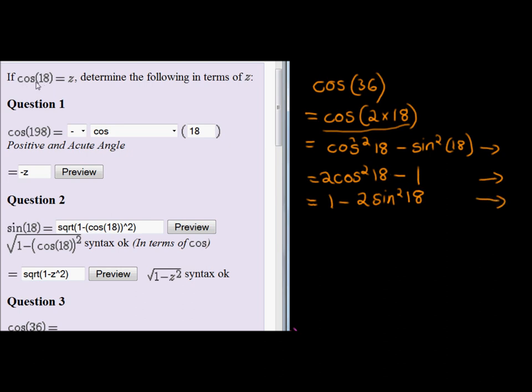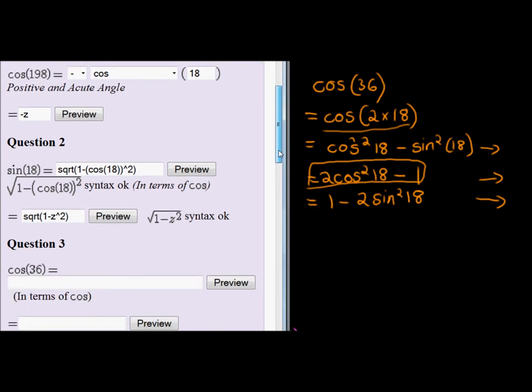Now, since we know what cos of 18 is, of course, it would be better to use this one. We already know what cos of 18 is equal to. We also know what sin of 18 is equal to. We calculated it here. But it's just going to be simply using that expression. And so let's go and answer question 3.